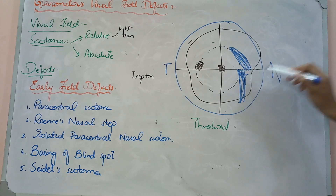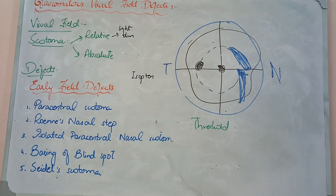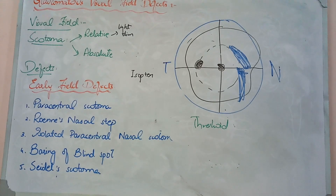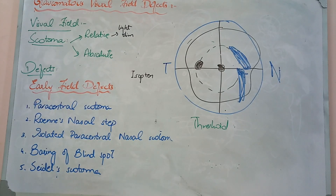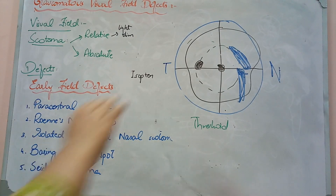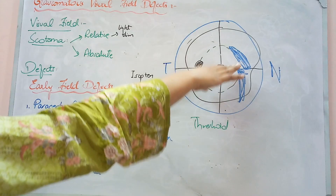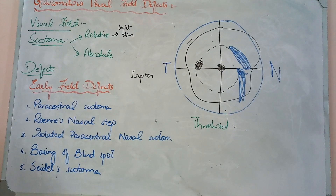This is the result of the nasal step. Basically, in this nasal step, the visual field above and below the horizontal will be different.